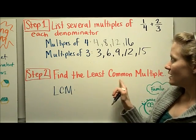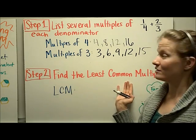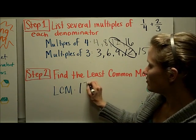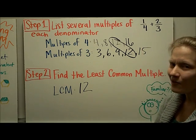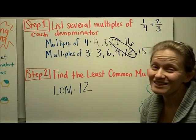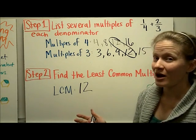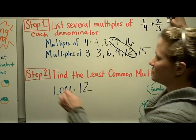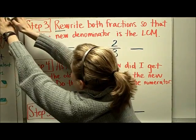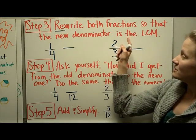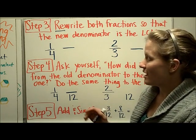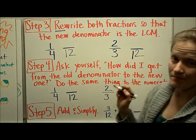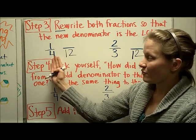Step two is to find the least common multiple — the smallest number that they both have in their list. I'm going to look and find anything that's the same. Twelve is the least common multiple of four and three. These steps are the same ones we used to compare fractions. Step three is to rewrite both fractions so that the new denominator is the LCM, making new fractions with twelve as the denominator on both — like making an exchange going from fourths to twelfths.